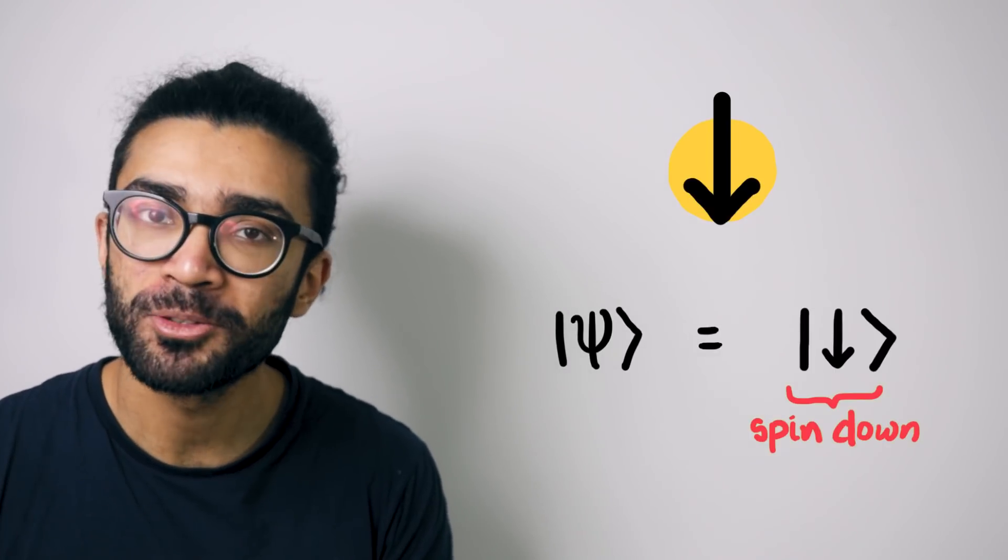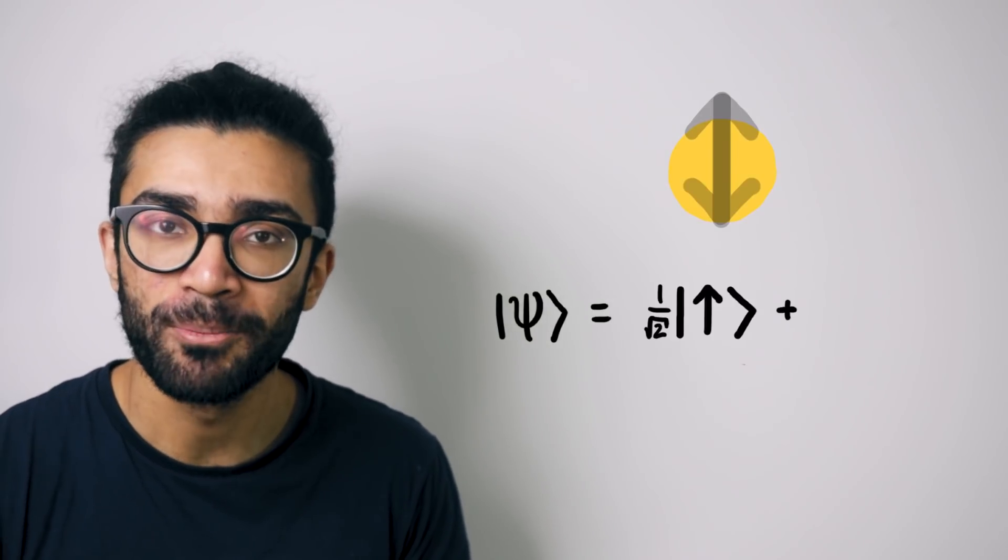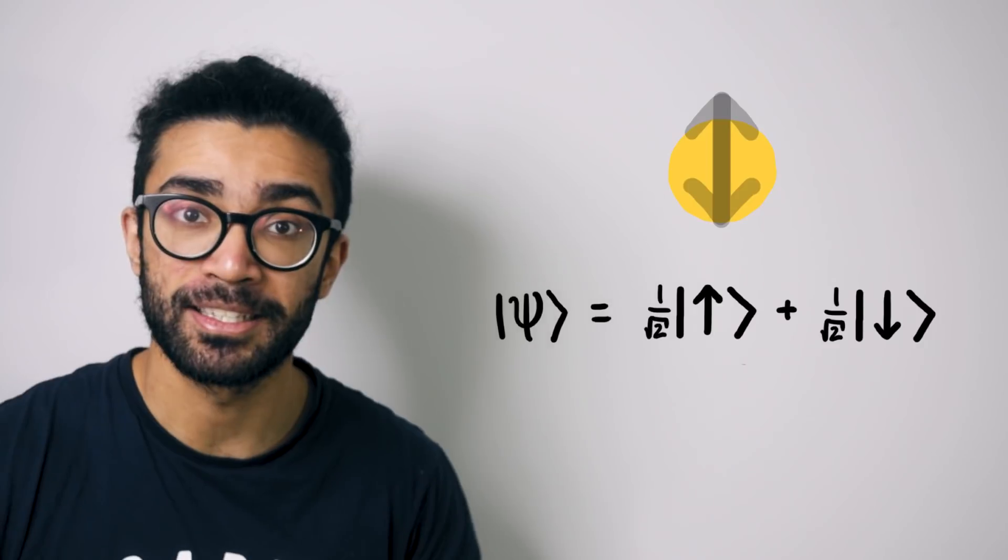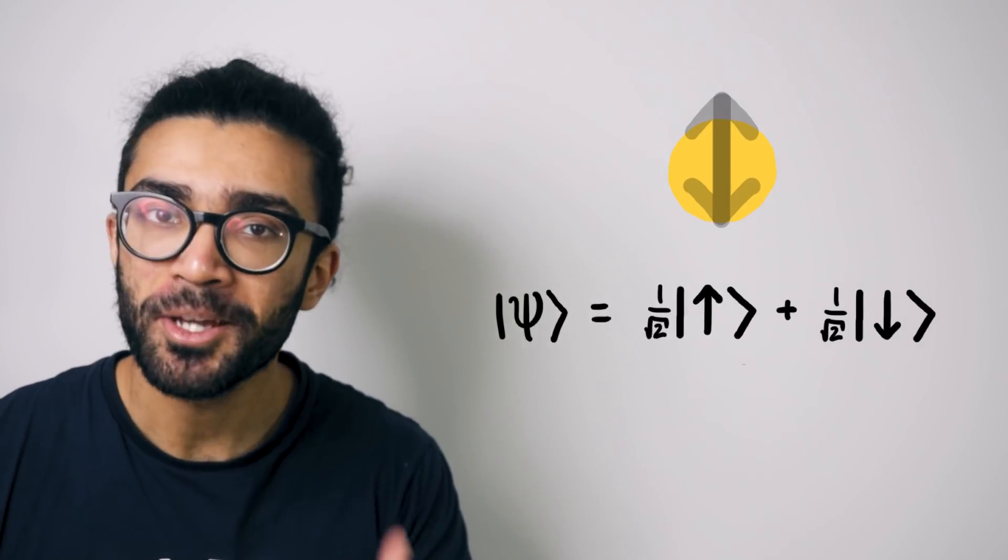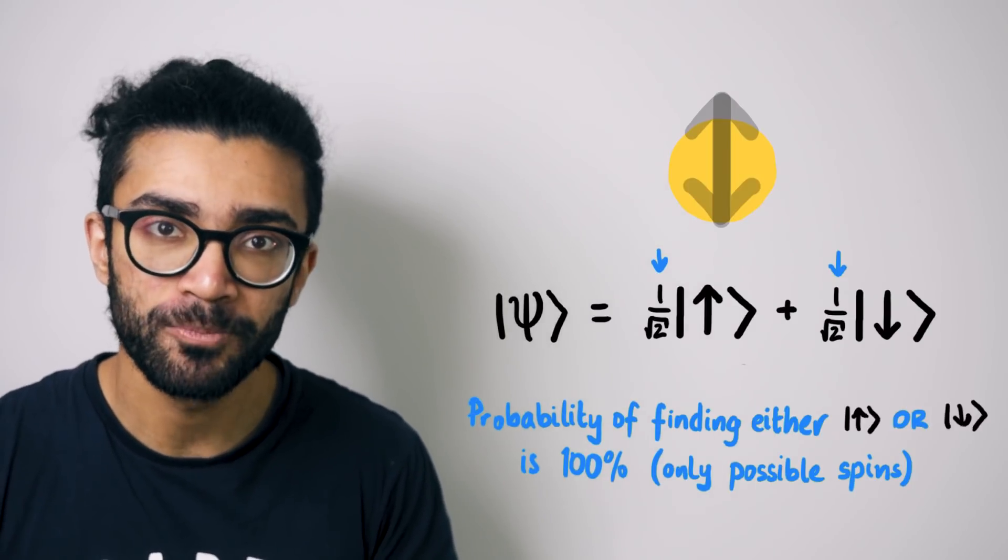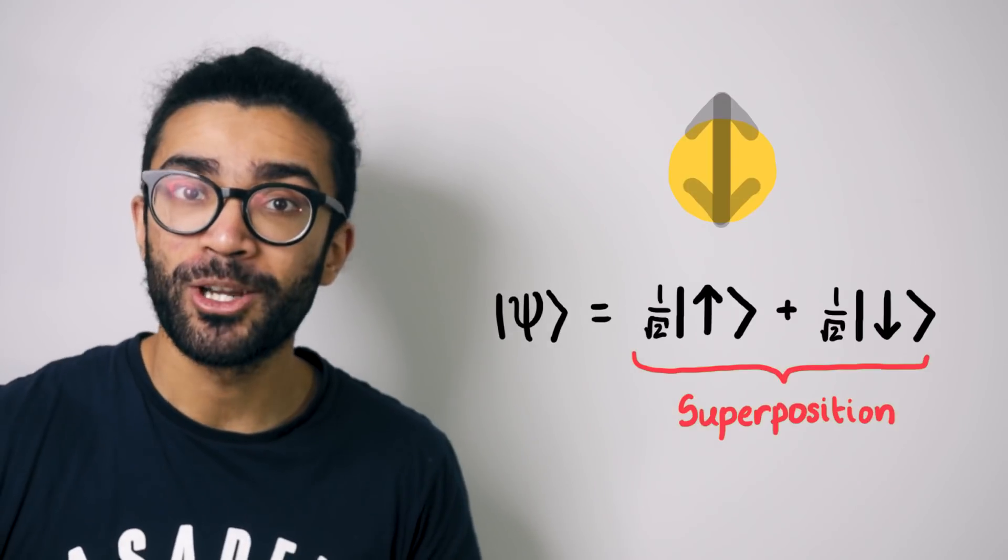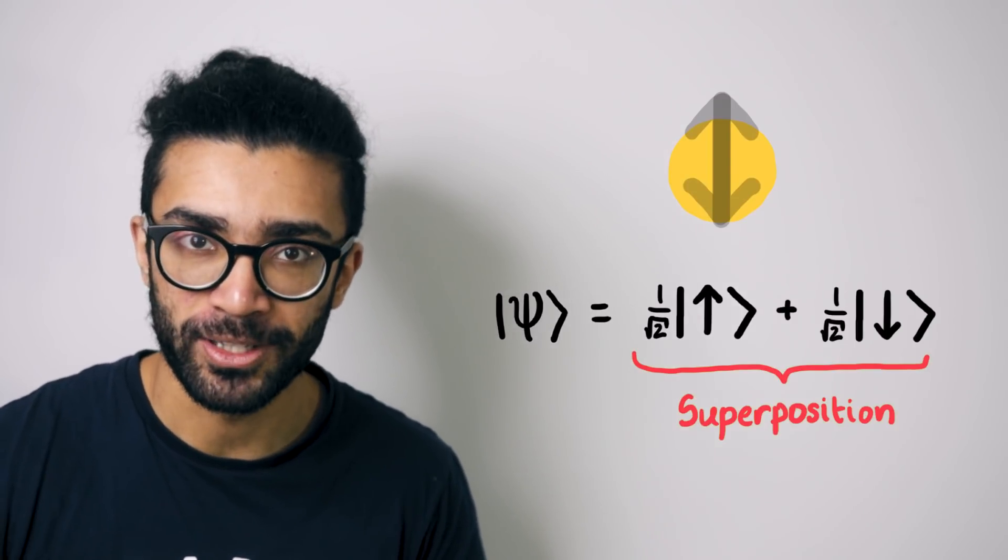And in quantum mechanics our particle can also be in a superposition, a sort of blend of the two spin states in this case, before we make a measurement on it. This is expressed mathematically as a sum of the spin up and spin down states, because we're saying that it's in a combination of the two. And the numbers in front of each state are just there to make sure that the probability of finding the electron in either the spin up or the spin down state is one, because those are the only two possible spin states that our electron can have.